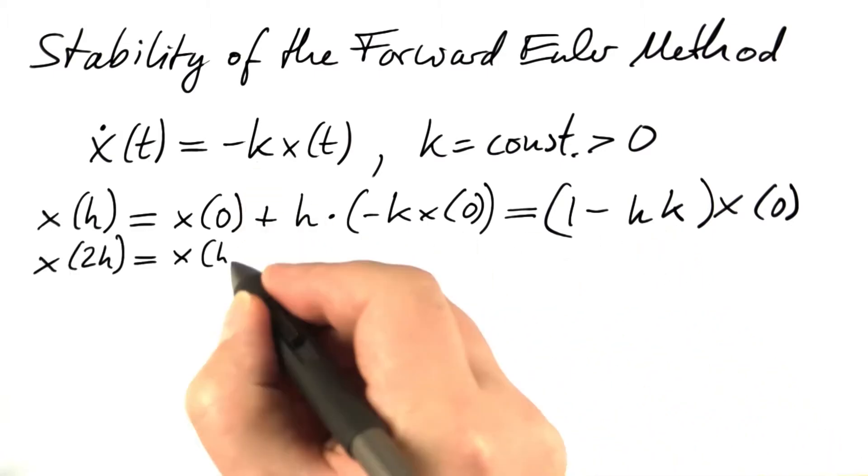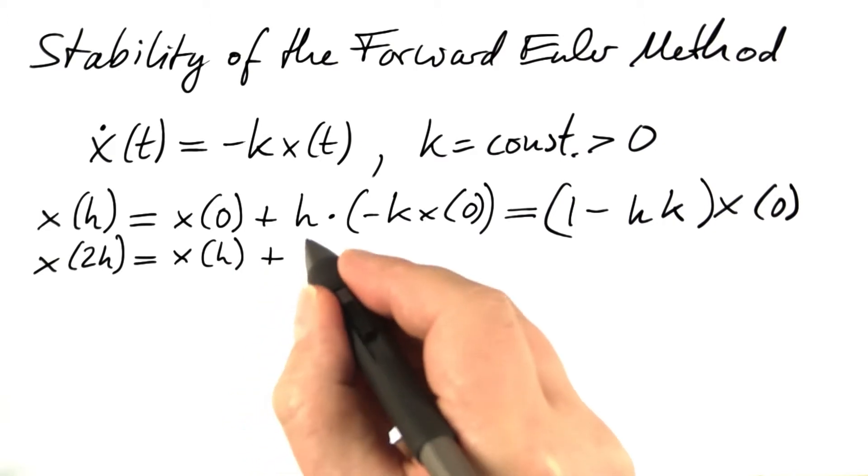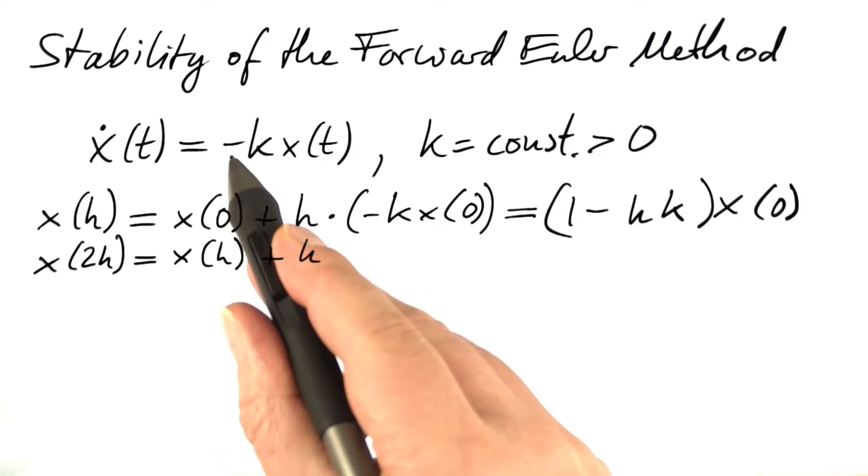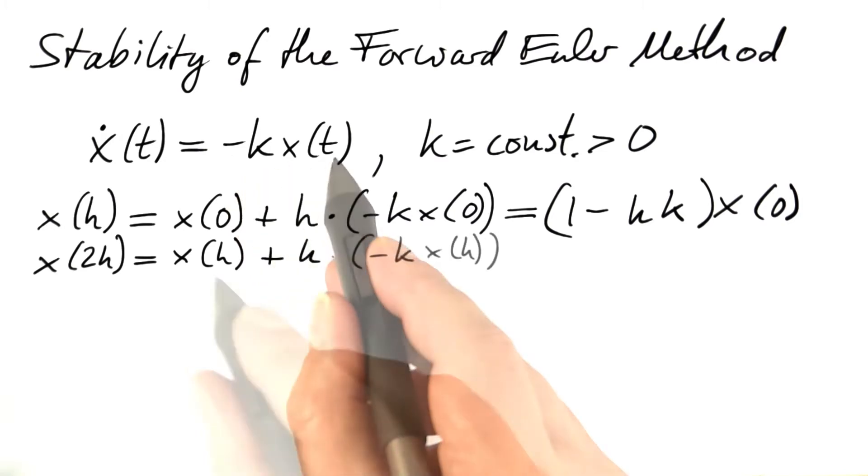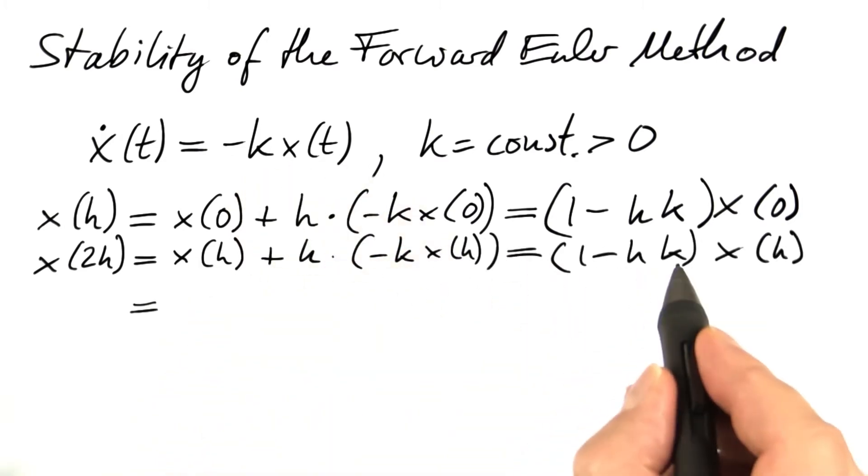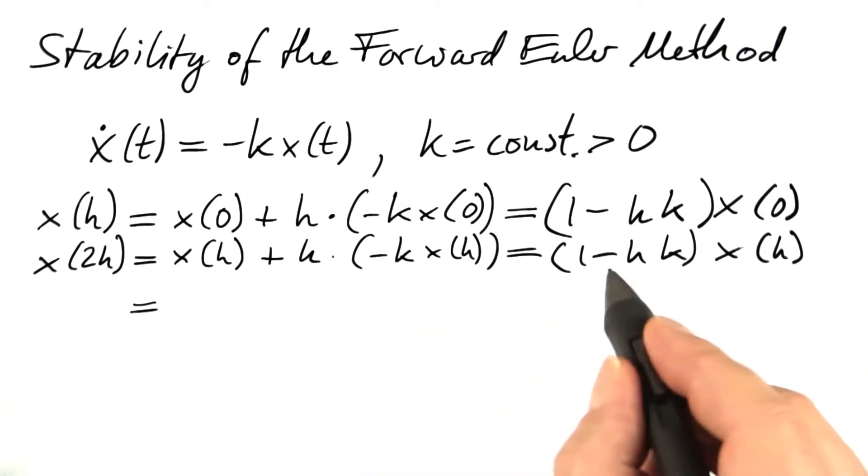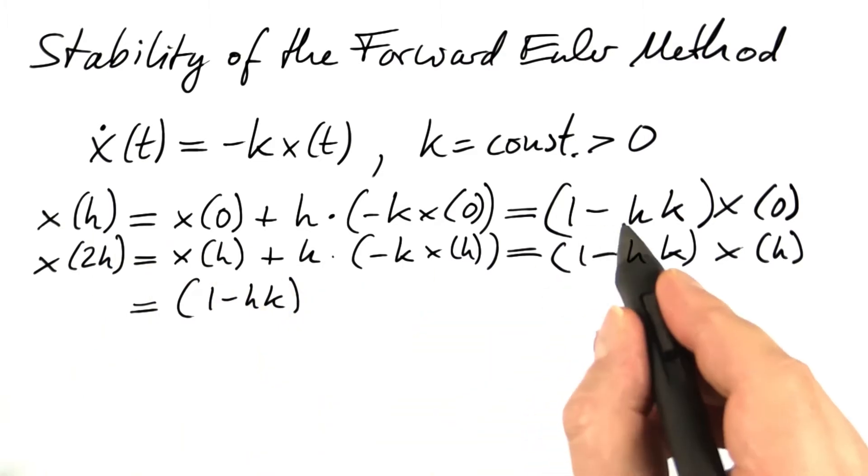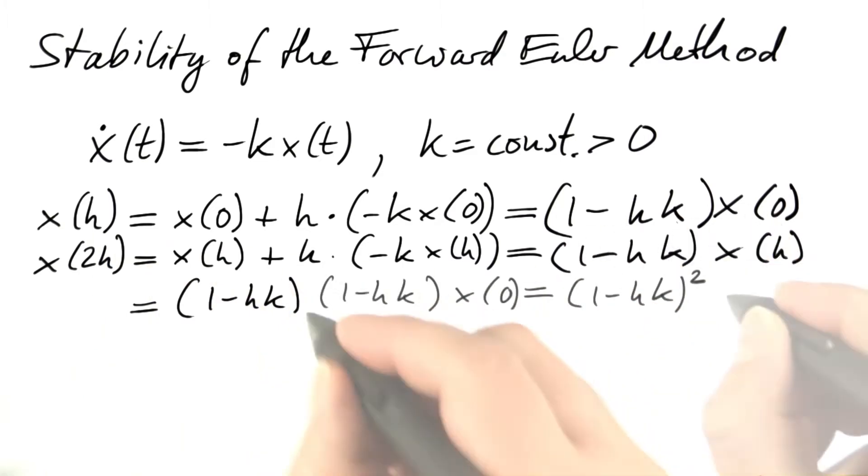Now let's do the second step. It's x at the end of the previous step plus h times the rate of change at that time, or actually our estimate of that rate of change at that time, which would be minus k x of h. Again, we can factor out and we can plug in the value of x of h from the first step. So we end up with 1 minus hk times, now comes x of h, 1 minus hk times x of zero, which is, if we combine these two, 1 minus hk squared x of zero.